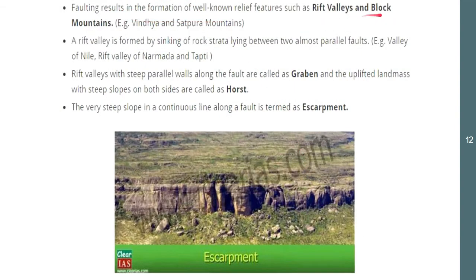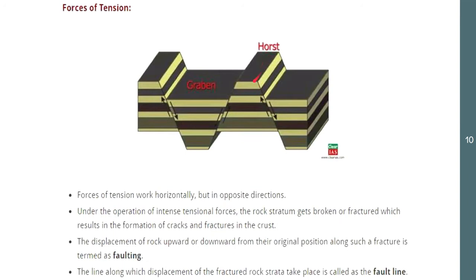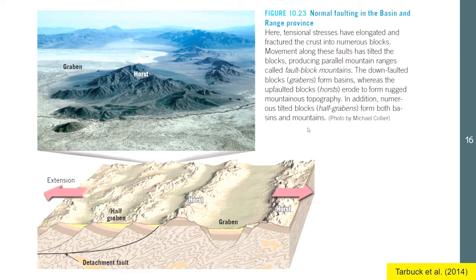Examples of fault block mountains include rift valleys and block mountains. The rock fracture that is raised upward we call the horst, and the rock segment that is pushed downward we call the graben. Due to tensional forces or the stretching of rock slabs, it creates these down-faulted blocks we call graben and up-faulted blocks called horst, as seen in these rock formations.